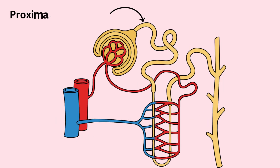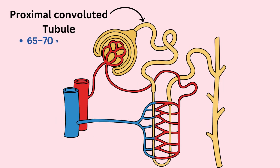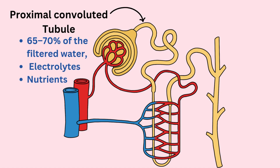The proximal convoluted tubule recovers about 65-70% of the filtered water, along with electrolytes like sodium and chloride ions and nutrients.